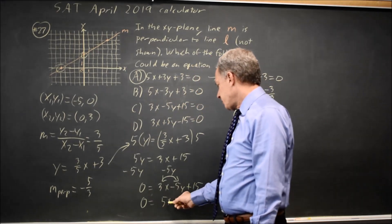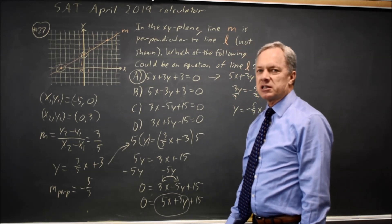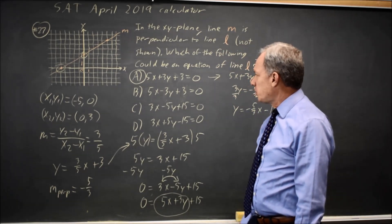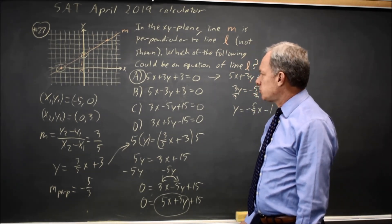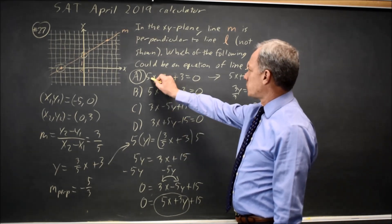I chose to make the negative positive. Any standard form that has 5x plus 3y on the same side of the equal sign will be perpendicular to my original line. And that would be choice A.